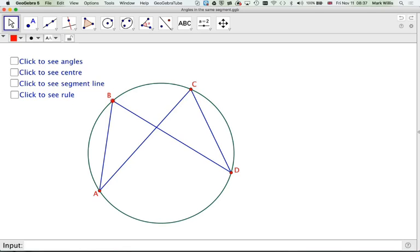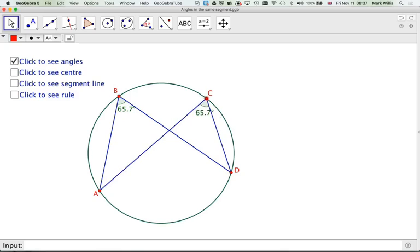And if we click to see the angles, we will see that they are both the same value. In this case, 65.7, 65.7. And if we move B and C, it doesn't matter anywhere in here, then the angle will always be 65.7.